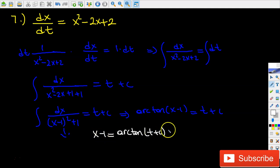Then I have to get rid of this negative one. So my final general solution is going to be x equals arc tangent of (t plus c) plus 1. This is my final general solution.